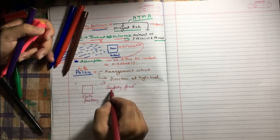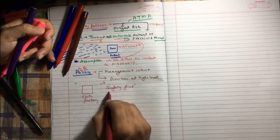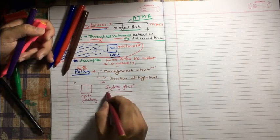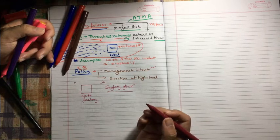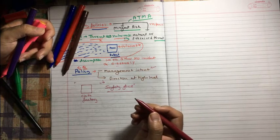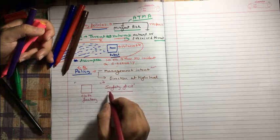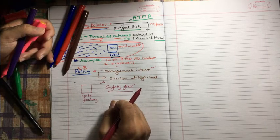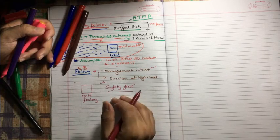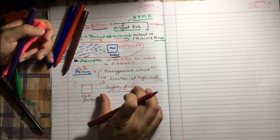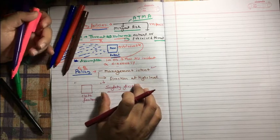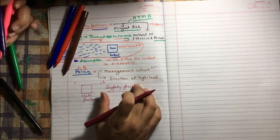Safety first is the policy. Management is saying whatever comes to you, if it's going to compromise your safety, you need to give priority to safety - safety first. This is management intent and this is very high level. It's not going to explain what you mean by safety first - safety of machines, safety of humans, or safety of the environment. It just says safety, whatever comes under safety, you need to take priority first.